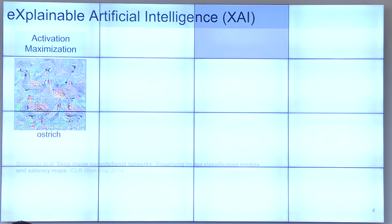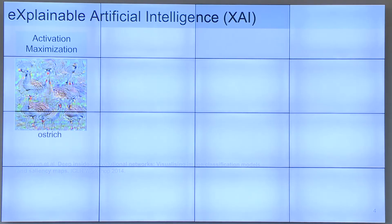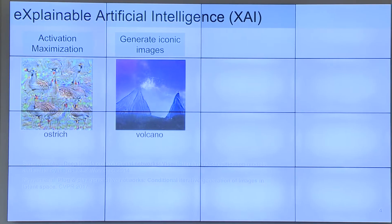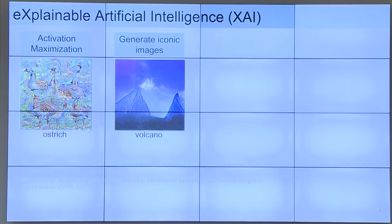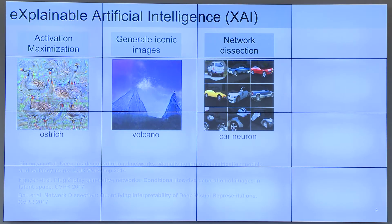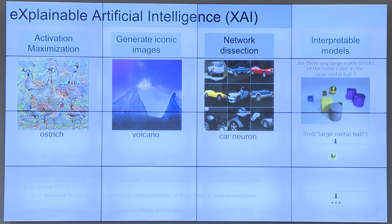This is not obviously the only type of question you can ask about the model. For example, you may wonder what constitutes a category for the model, and you can visualize that using activation maximization or by generating iconic images, which produce images that are highly representative of some class. You can also try to find some neurons in the network that are responsible for certain categories, like cars or wheels. Another option is to start with a more interpretable model in the first place, so you get more intuition about how the model works by just looking at the process of inference. Our team works with a team at Berkeley, and this is just part of a program.